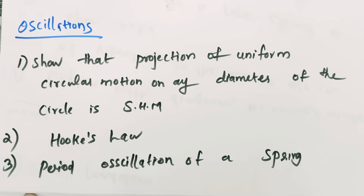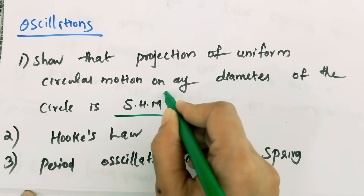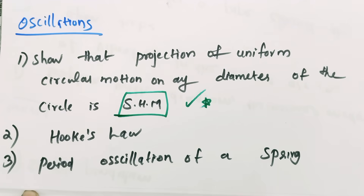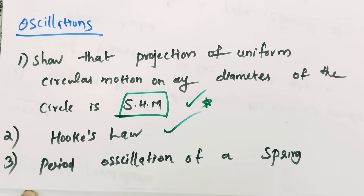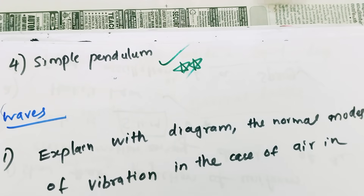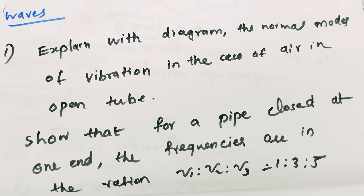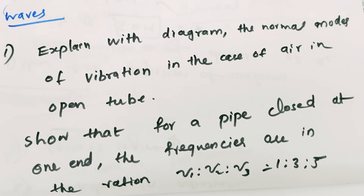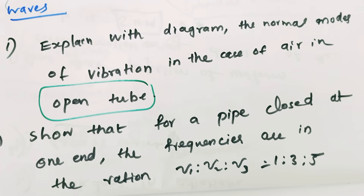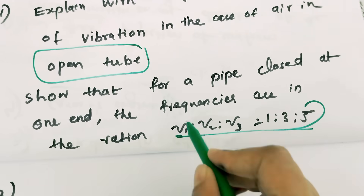Oscillations: show that the projection of uniform circular motion on any diameter of the circle is SHM. Hooke's law — this is the period of oscillation of a spring. This is the period of oscillation of a simple pendulum. Explain with a diagram the normal modes of vibration in the case of air in an open tube or closed tube. Show that for a pipe closed at one end, frequencies are in the ratio.